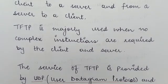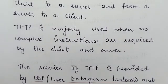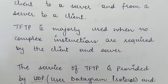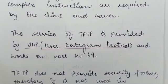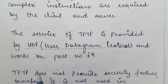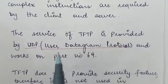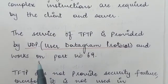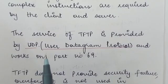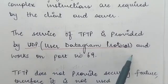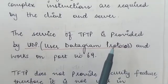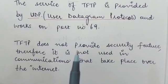TFTP is majorly used when no complex instructions are required by the client and server — that means when there is no complexity in data communication. In such cases, TFTP can be used for communication between a client and a server. The service of TFTP is provided by UDP, the User Datagram Protocol, and it works on port number 69.